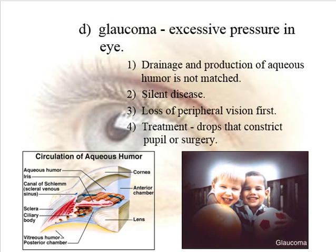Glaucoma is a silent disease — you can't feel the increased pressure in your eye. So every time you visit the optometrist or ophthalmologist, they check the pressure in your eye. They can shoot a little puff of air at the eye to see how much it deflects, or they can place an instrument directly on the anesthetized eye to measure pressure. If they determine excessive pressure, they will want to treat it to stop damage to the optic nerve.